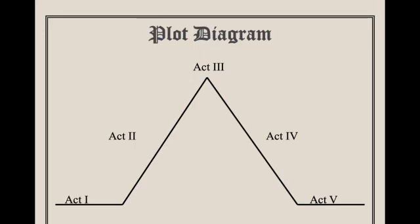Here is your plot diagram where you start off with the inciting incident and the introduction of characters and setting in act one. You have the rising action in act two. In act three, you have the crisis and the climactic points where characters are making their decisions. Act four is the falling action — the consequences of those decisions in act three. And then in act five, you have the resolution, the catastrophe.